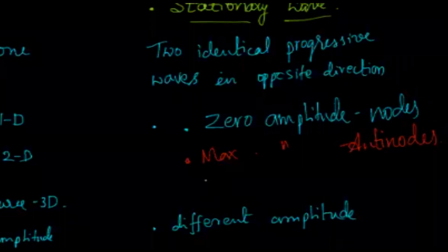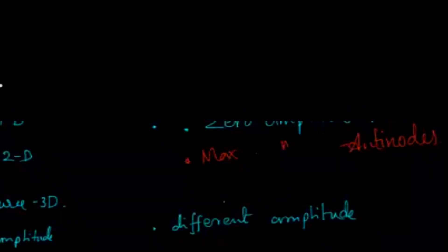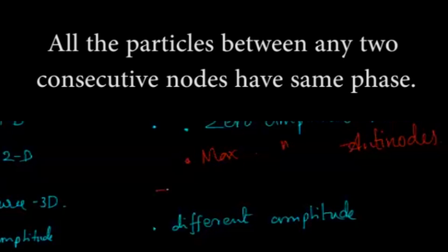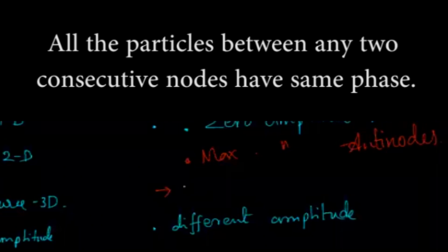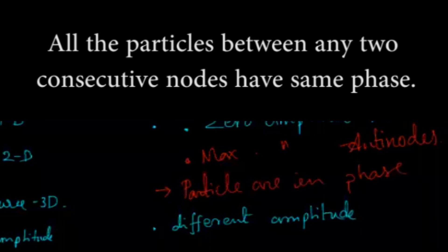In a stationary wave, only a few points are in motion while the rest are not moving. One important feature is that all particles are in phase — if one point is moving upward, the very next point is also moving upward. In a progressive wave, not all particles are in phase; only those with a path difference of lambda are in phase. But in a stationary wave, all particles share the same phase.